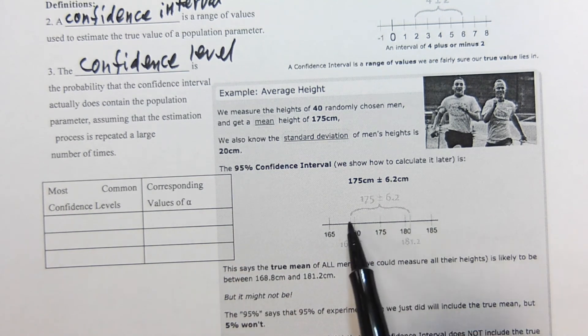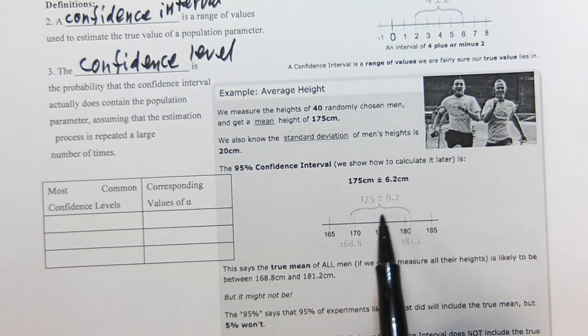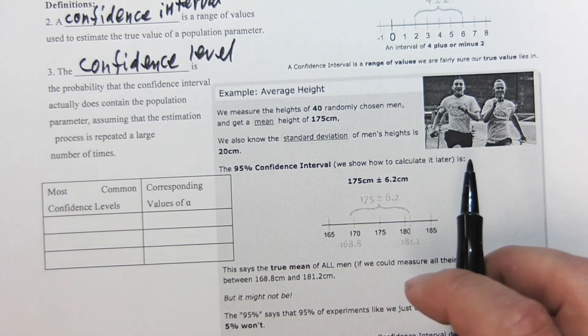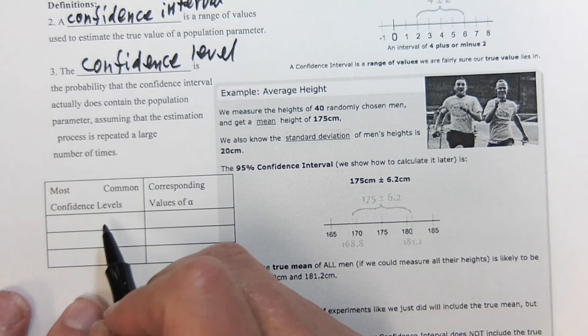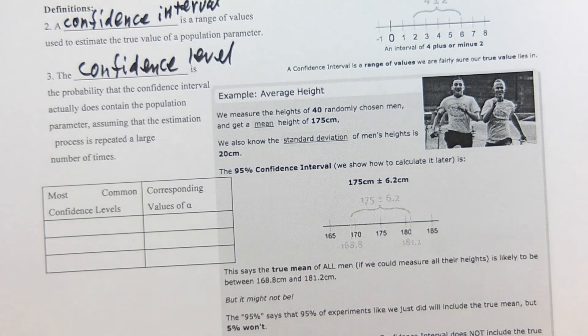We measure the heights of 40 randomly chosen men and get a mean height of 175 centimeters, standard deviation is 20. So 95 percent confidence interval means we're going to figure out how far away from the mean can we go to be 95 percent confident that the true mean or proportion is in there.